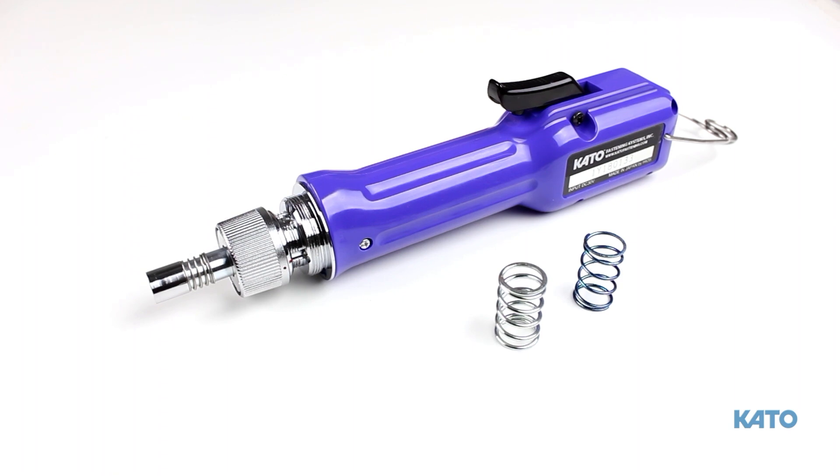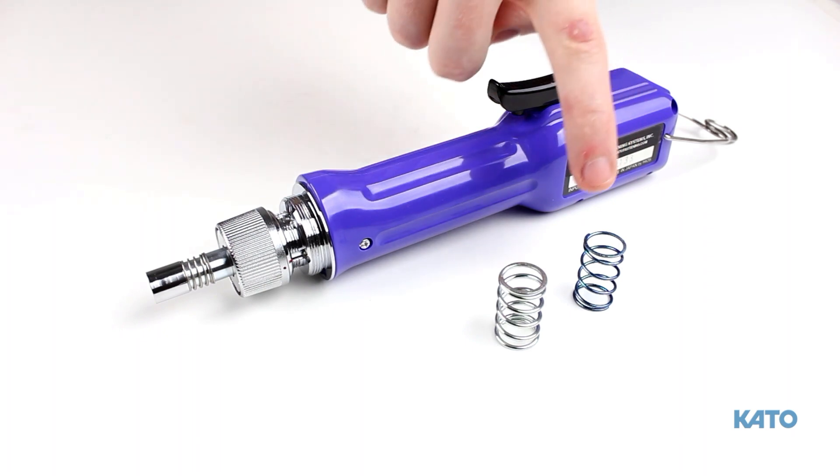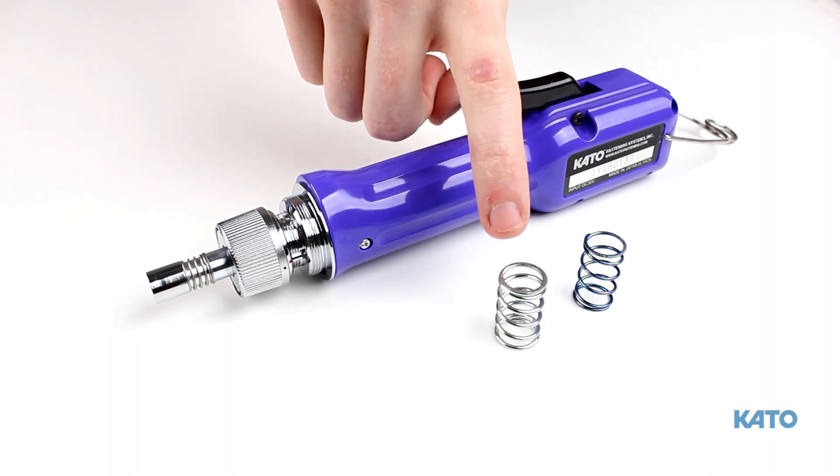The spring is located beneath the torque-adjusting nut. Use the blue spring for smaller sizes and the silver spring for larger sizes.